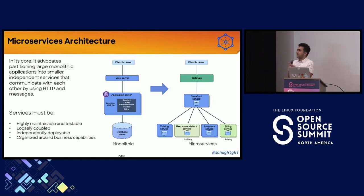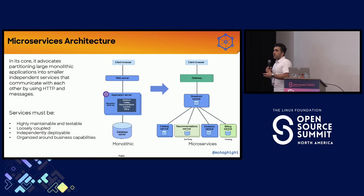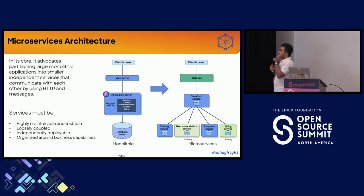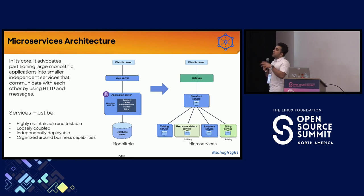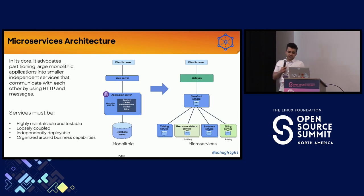One key advantage: look at what happens during Christmas holidays when traffic is high on online shops. Catalog services are always busy, but not everybody goes through payment and billing. You just need to scale your catalog service, not the other ones, because not everybody goes through their basket to make a payment. Whereas in the past, to scale an application you had to scale the entire monolithic application — mostly as a VM. Microservices give you a lot of flexibility.